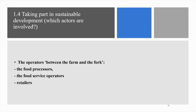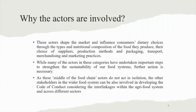Subchapter 1.4: Taking part in sustainable development. Which actors are involved? The operators between the farm and the fork are the food processors, the food service operators and the retailers. These actors shape the market and influence consumers' dietary choices through the types and nutritional composition of the food they produce, their choice of suppliers, production methods and packaging, transport, merchandising and marketing practices. As these middle-of-the-food-chain actors do not act in isolation, other stakeholders in the wider food system can also be involved in developing the code of conduct, considering the interlinkages within the agri-food system and across different sectors.